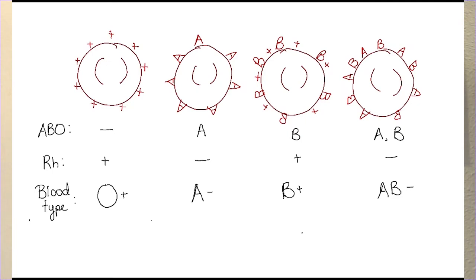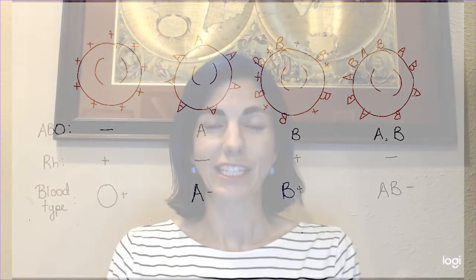For instance, I am O positive. I do not have an A tag, I do not have a B tag, but I do have the RH positive antigen. So I am considered O positive, which is actually the most common blood type.